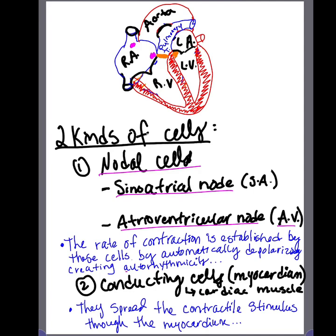The sinoatrial node is located in the posterior wall of the right atrium, close to the superior vena cava. The AV node sits within the floor of the right atrium. The SA node is also referred to as the cardiac pacemaker because these pacemaker cells automatically generate 80 to 100 action potentials per minute. This is where terms like bradycardia — slower than normal heart rate — and tachycardia — faster than normal heart rate — come from.